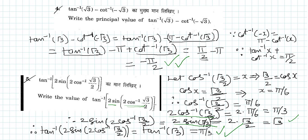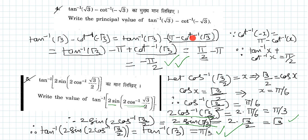This is equal to tan inverse of root 3. We know that cot inverse of minus x is equal to pi minus cot inverse of positive x. Using this formula, cot inverse of minus root 3 can be written as pi minus cot inverse of plus root 3.